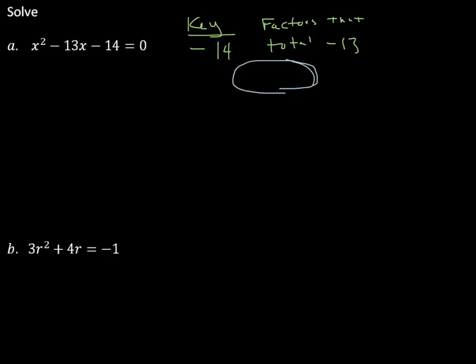And when we did long key factoring, if you had a number out front, you had to break this middle term up. But we can use the short key method. So we know that this is going to factor into x minus 14 and x plus 1 equals 0.